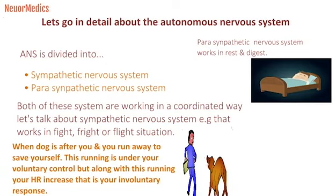When a dog is after you and you are fleeing to protect yourself, what about your GIT activity? It should also go down. The sympathetic nervous system knows which organ activity should be enhanced and which should be decreased. For example, cardiac activity will go up and GIT activity will go down under stress. Opposite to that, when you are not under stress and are very comfortable, sympathetic activity goes down and parasympathetic activity goes up, causing heart rate to decrease and GIT activity to increase.